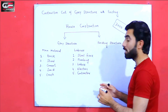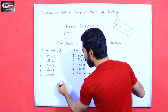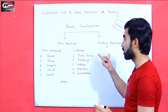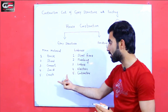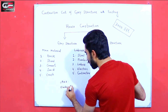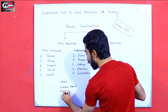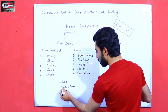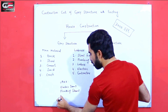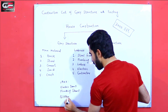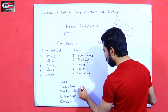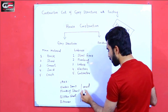We also have other materials used in gray structure and finishing structure. These include electric items, plumbing items, polythene sheet, bitumen, mud, and filling material.